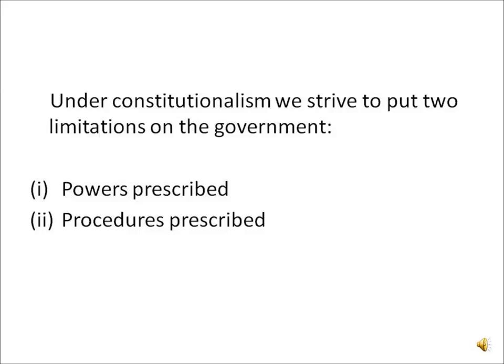Under constitutionalism, two types of limitations are imposed on the government. First, powers are prescribed — what powers the government has been given, meaning what government cannot do beyond those powers. Second, procedures are prescribed — the ways in which the government can use its power. It is based on the firm belief that limited government is the best government, using the constitution consciously as an instrument of imposing these limitations.